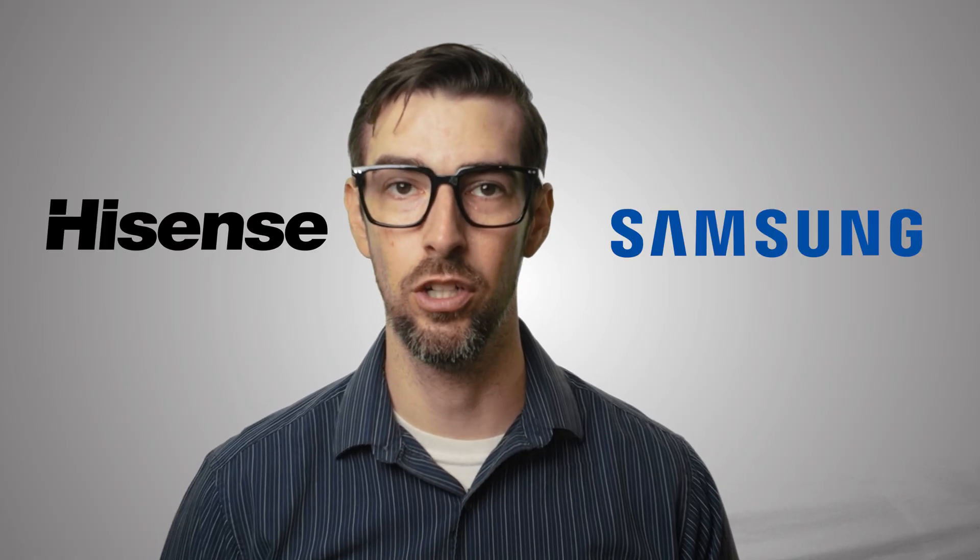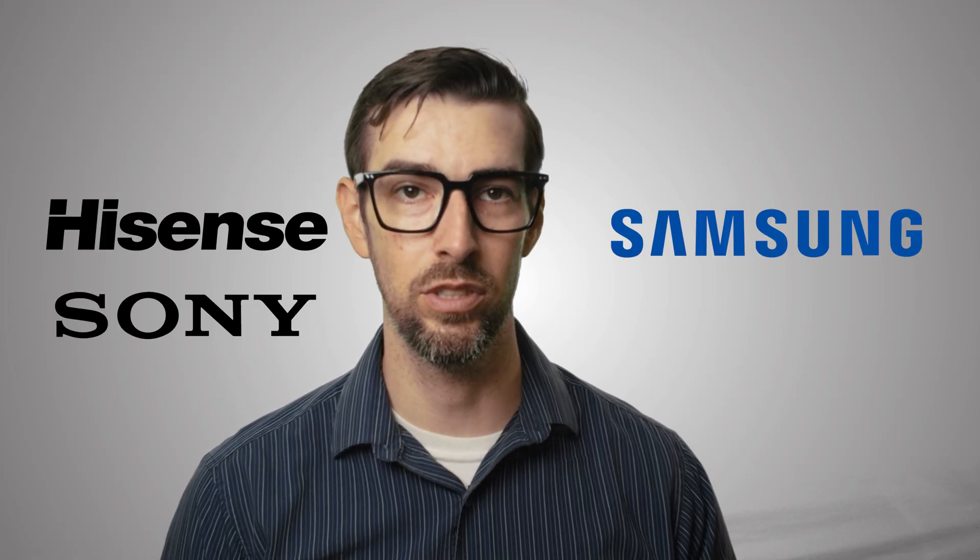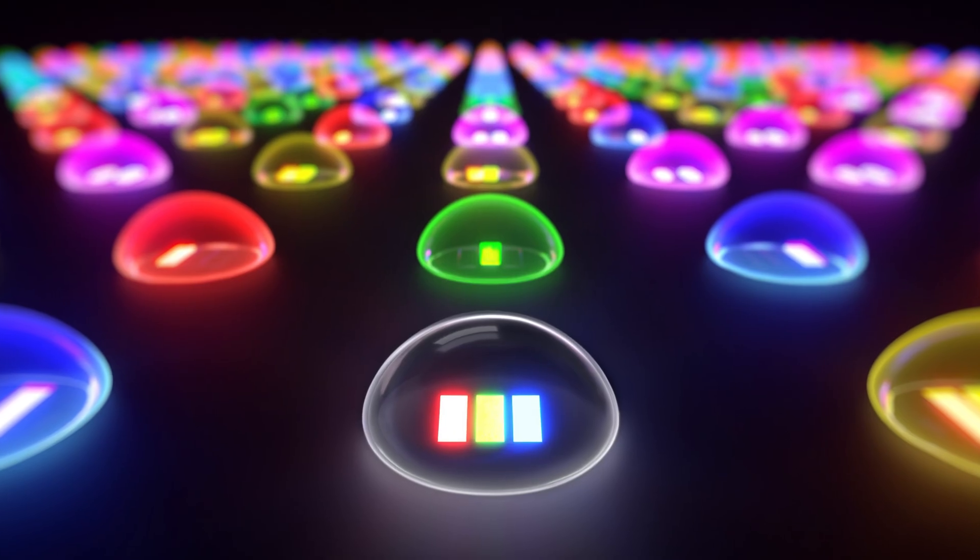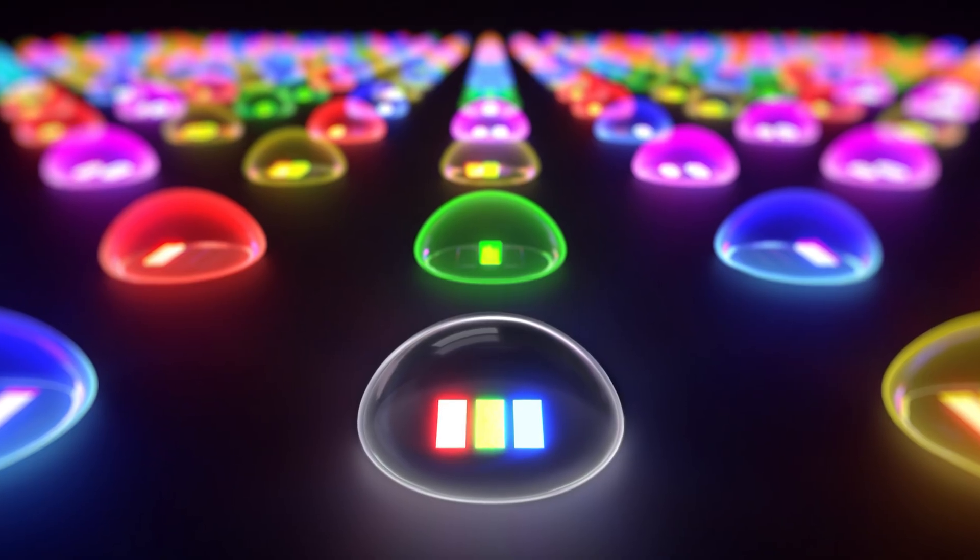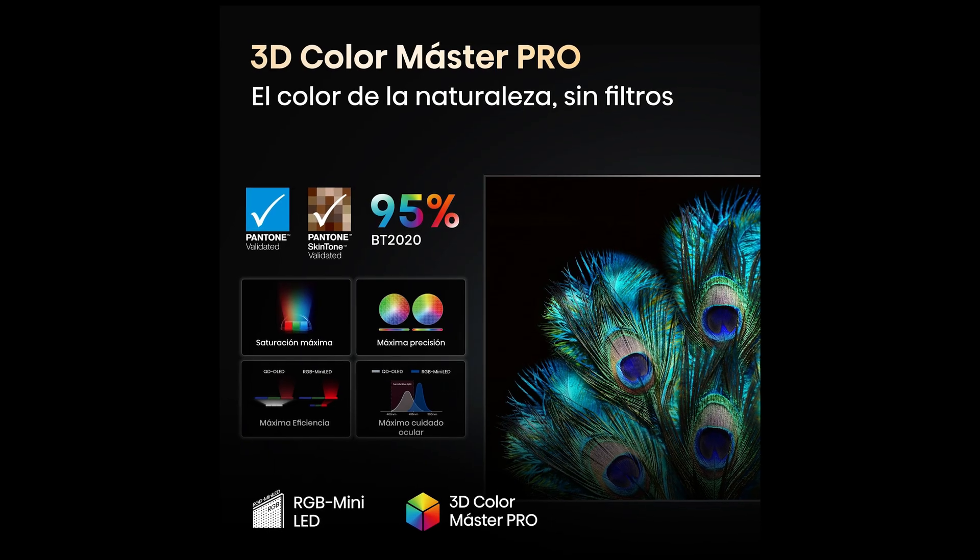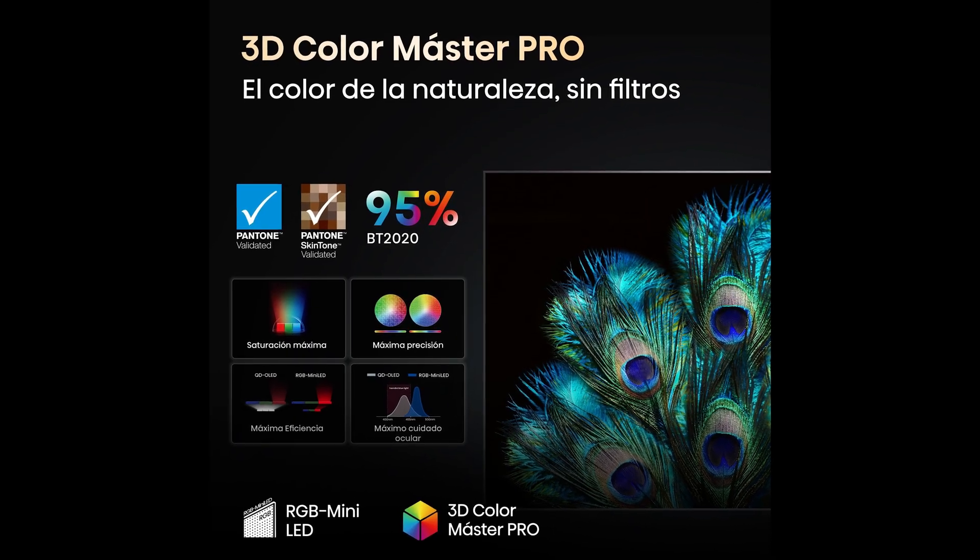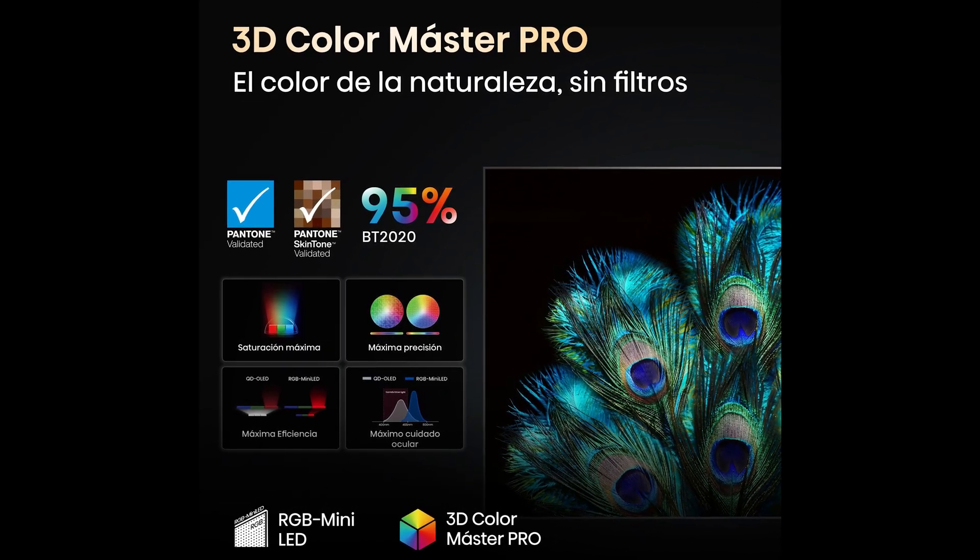So far, three brands have adopted this technology. Hisense and Samsung have already shown production models, while Sony has only shown prototypes. Hisense has implemented the RGB mini LED approach using backlights made up of individually controlled red, green, and blue mini LEDs arranged in zones behind the LCD panel. They claim to be able to reproduce up to 95% of the BT 2020 color spectrum, which is impressive to say the least.